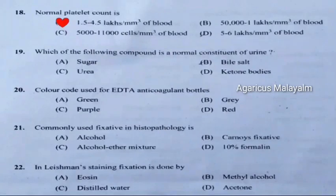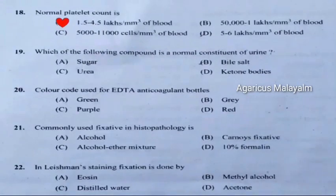Nineteenth question: Which of the following compounds is a normal constituent of urine? Correct answer is Option C: Urea.